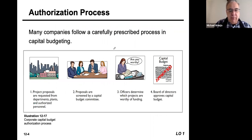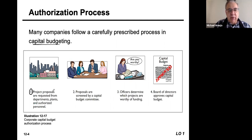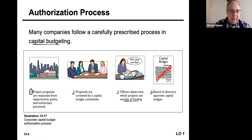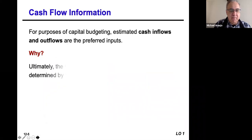There's usually a process done for any type of capital budgeting. A project is proposed — usually quite detailed in terms of what it needs, what the purpose is, and what the payoff looks like. The proposals are screened by a specific committee dealing with capital budget items. The corporate officers determine whether it's worthy of funding, and then the board of directors takes that recommendation from management and approves it. This is the process that happens in the corporate form.